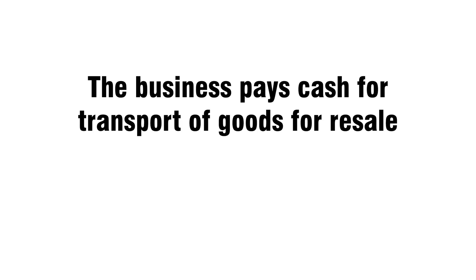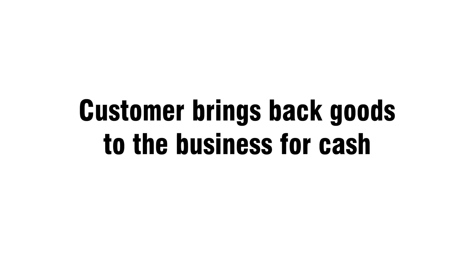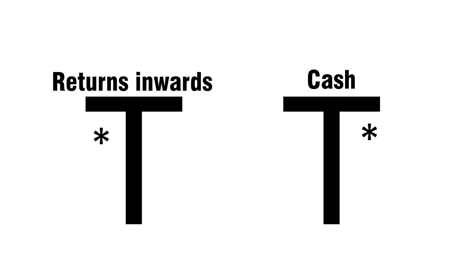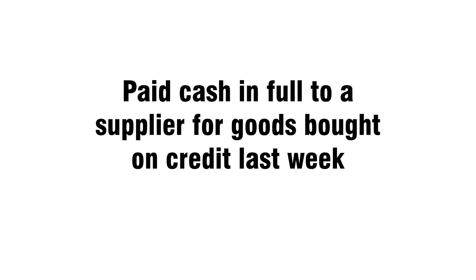The business pays for carriage of goods for resale: debit carriage inwards, credit cash. A customer brings back goods to the business for cash: debit returns inwards, credit cash. Bought a van on credit from Best Motos Limited: debit motor vehicle, credit accounts payable Best Motos Limited.